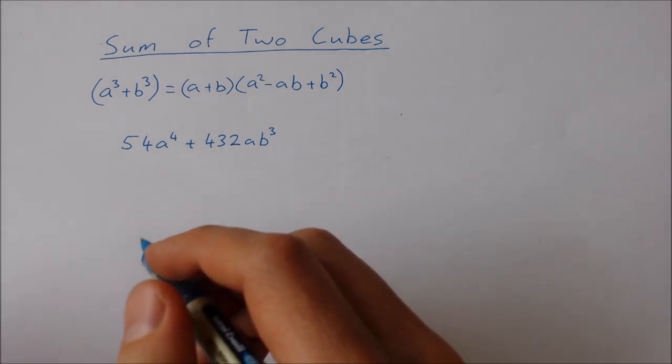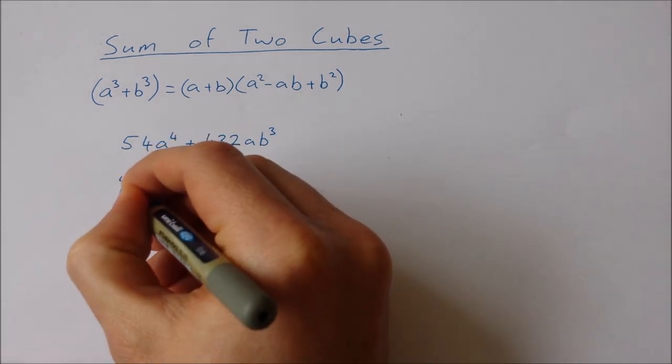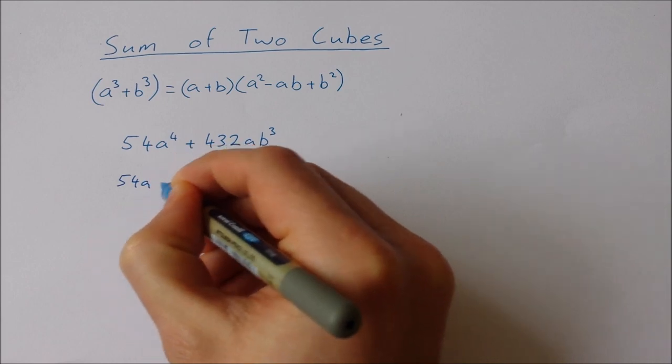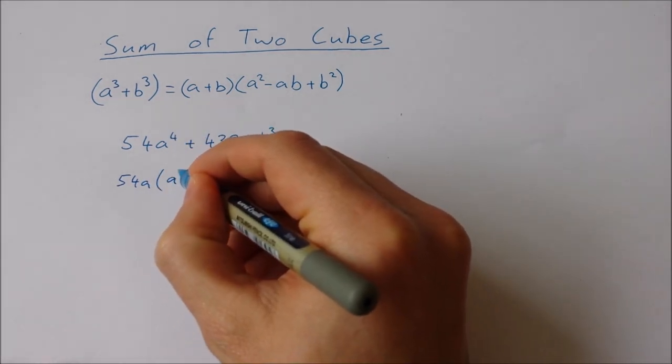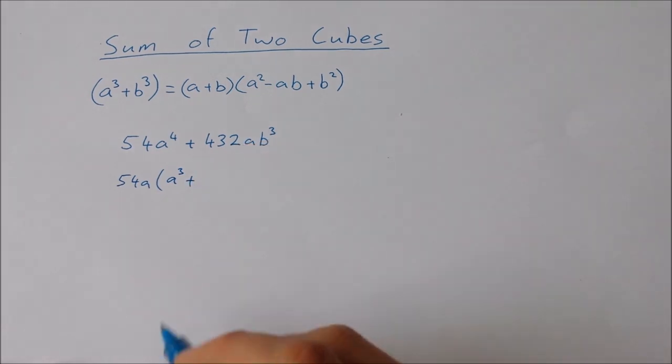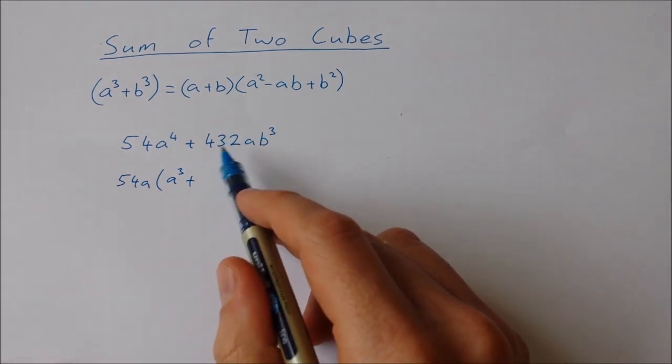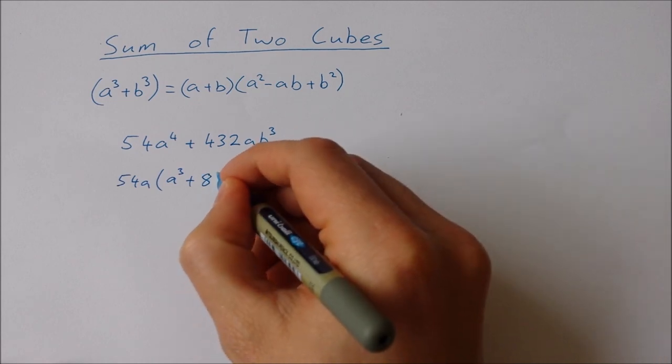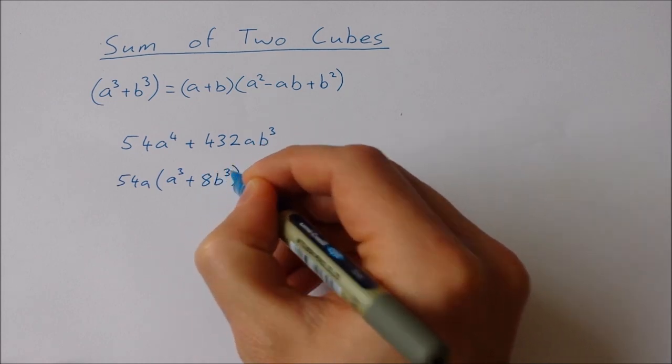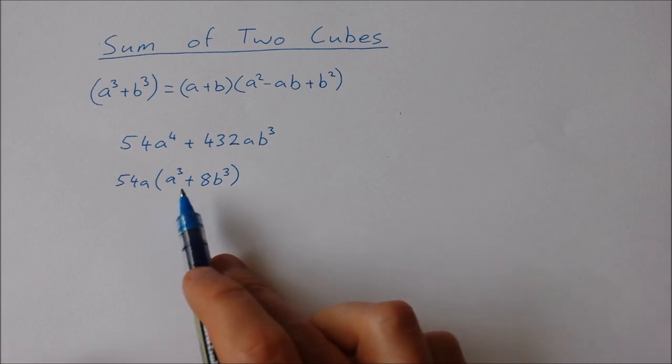So I'll take 54a outside the brackets and I'll be left with a³ plus 432 divided by 54, which is going to give me 8, and then b³. So now inside the brackets I have something that looks a lot more like the sum of two cubes.